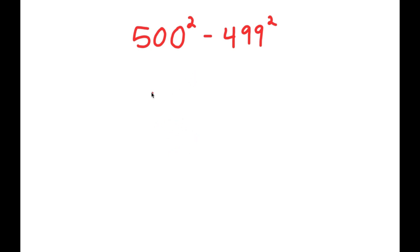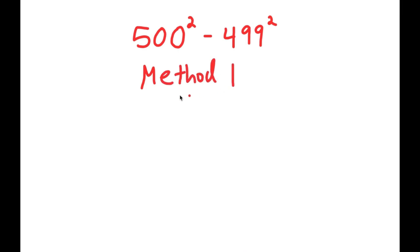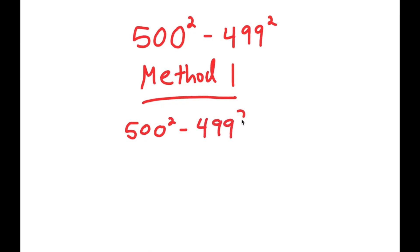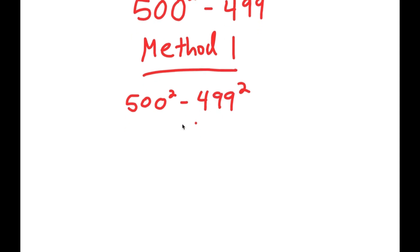In this problem I have 500 squared minus 499 squared. I have two methods to solve this problem. For method one, I'll start by rewriting 500 squared minus 499 squared.